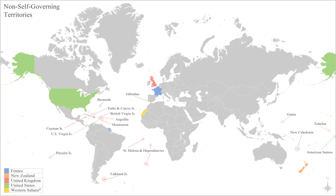Guinea-Bissau was a colony of Portugal since the 15th century, independent since 1974. Hong Kong was a British colony from 1841 to 1997 and is now a special administrative region of China. India was an imperial political entity comprising present-day India, Pakistan, Bangladesh, Myanmar, and the United Arab Emirates, with regions under the direct control of the United Kingdom from 1858 to 1947.